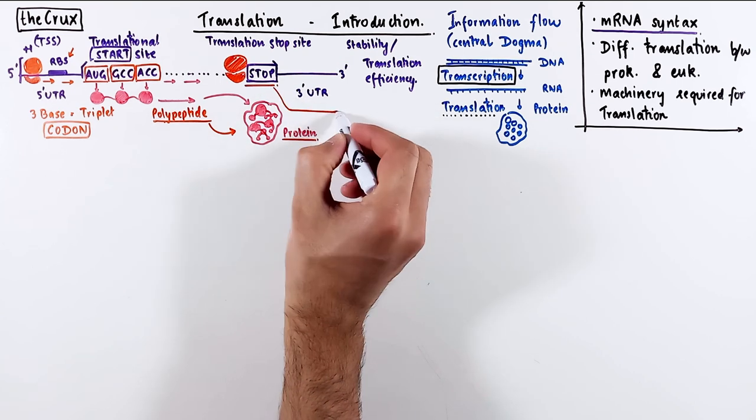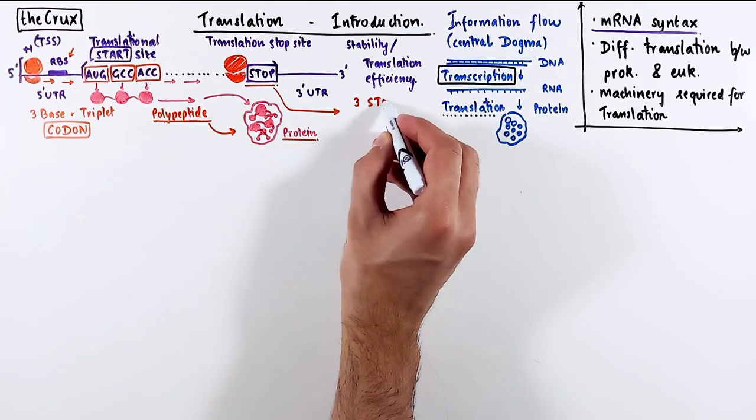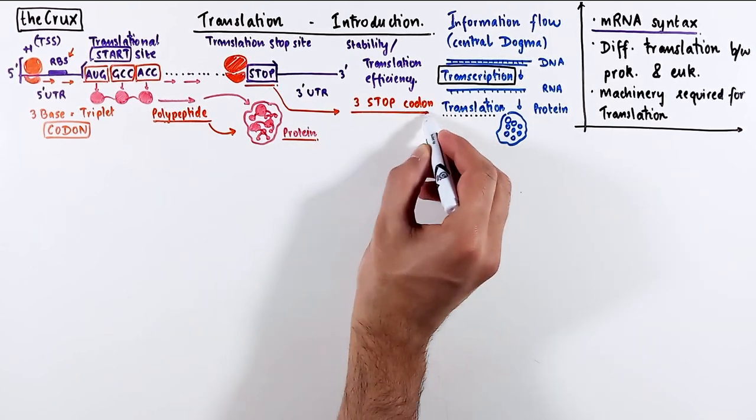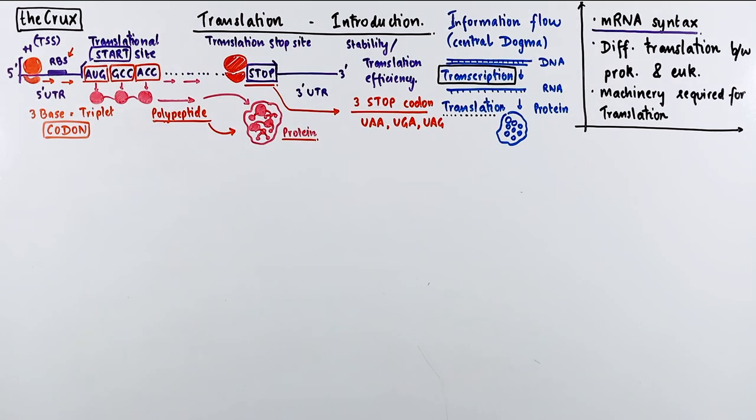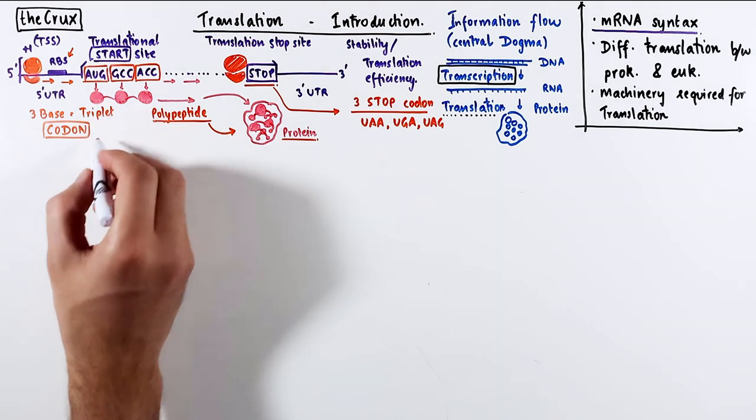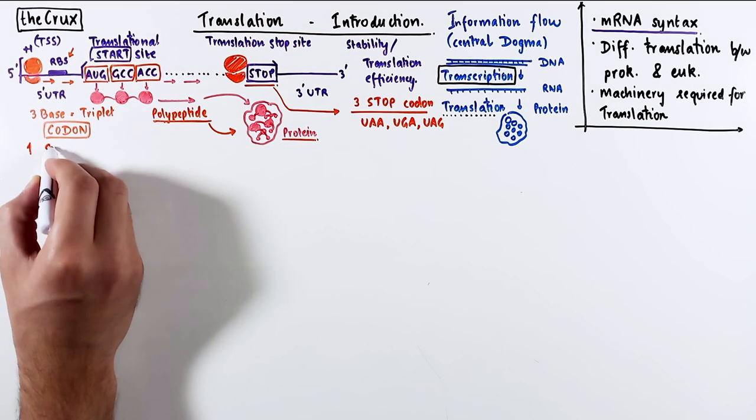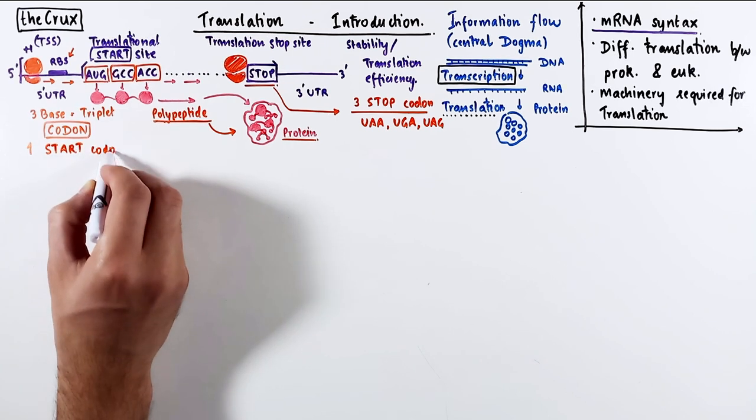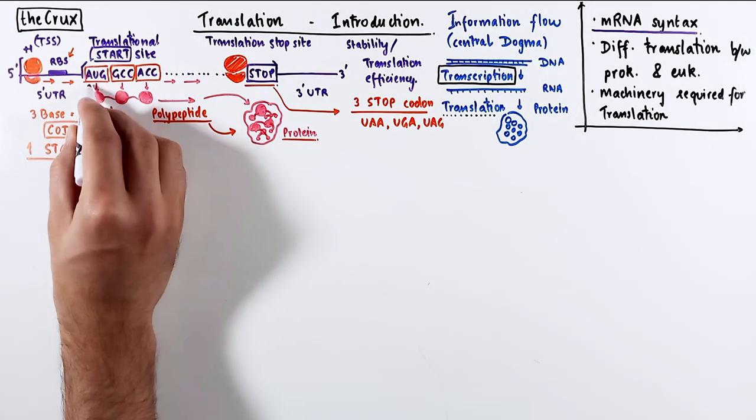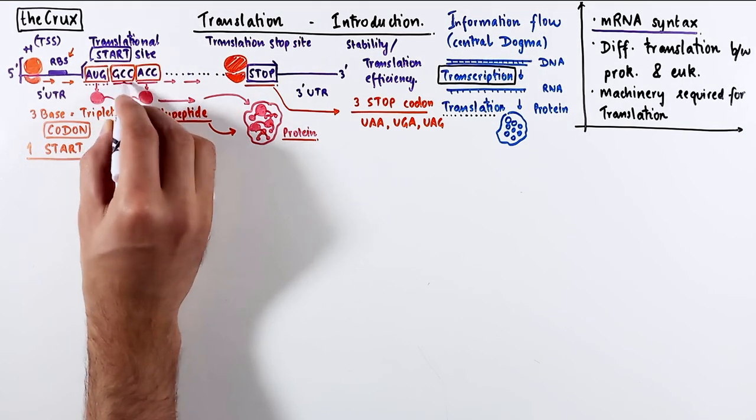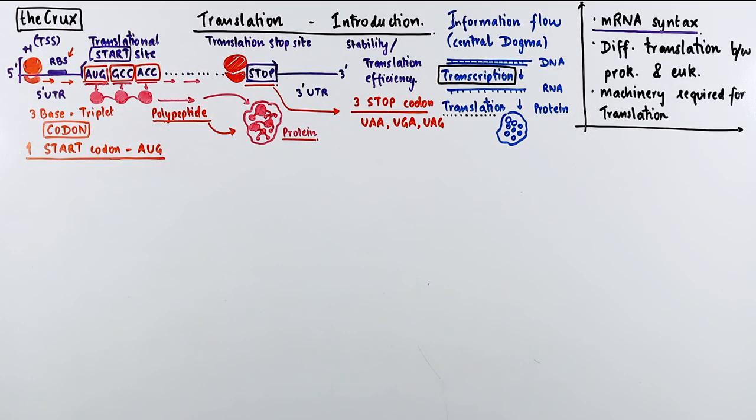To fill in some gaps about the stop codon, there are three possible stop codons: UAA, UGA, and UAG. If the ribosome reads any one of these, the translation process terminates. On the other hand, there is only one start codon, which is the AUG. Since AUG is the first one to be read, it defines the set of codons that will be decoded by the ribosome.